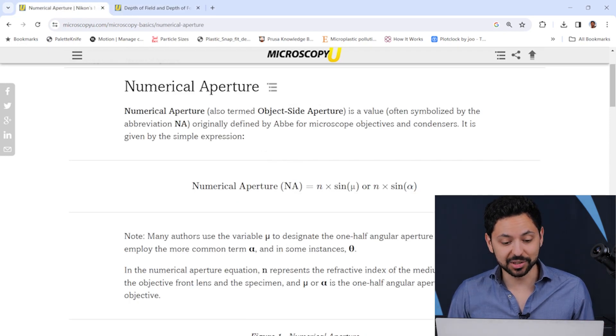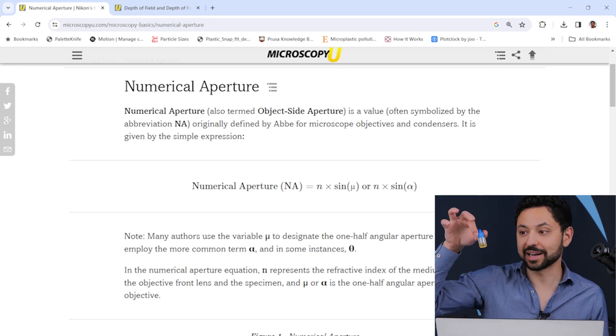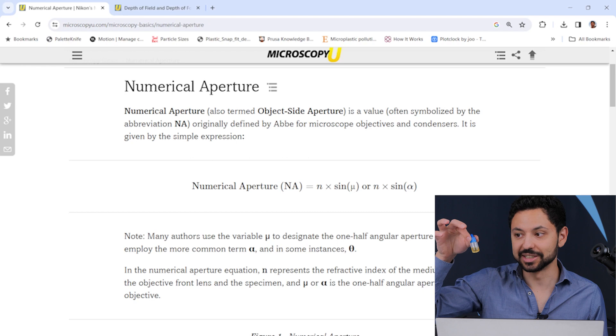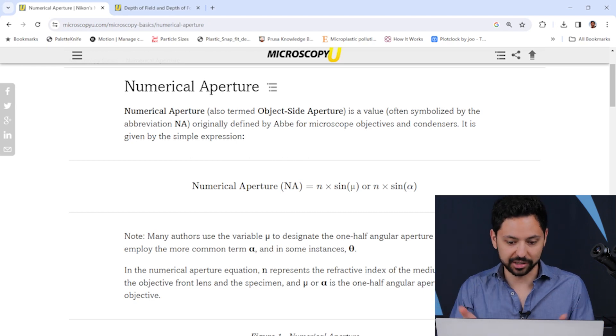And in case you're curious, here is the equation for numerical aperture. So it's the refractive index of the material times basically the angle of the light that's coming in. And so that's going back to the oil immersion fluid. This is changing the refractive index portion of this equation.